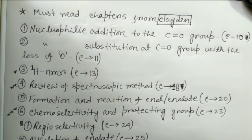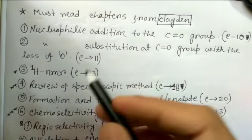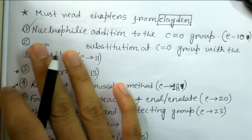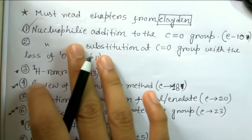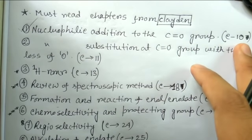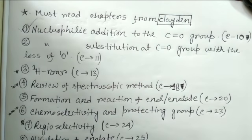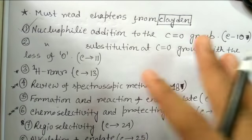These are the 20 to 23 chapters from Clayden that you must read to prepare for the CSIR NET exam. I'll tell you which chapters are important and why. The first chapter I'm mentioning is nucleophilic addition to the carbonyl group - chapter number 10 in the second edition of Clayden. From this chapter you'll get a lot of ideas about the reactions of carbonyl groups that no other book can explain as well.